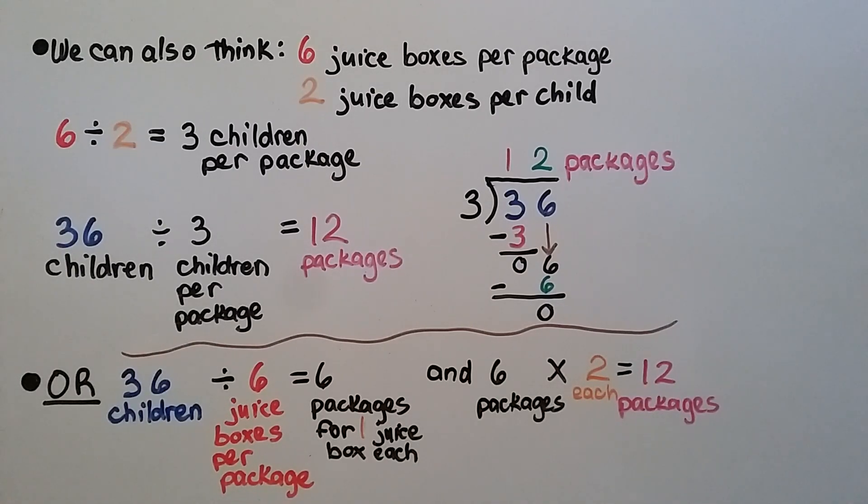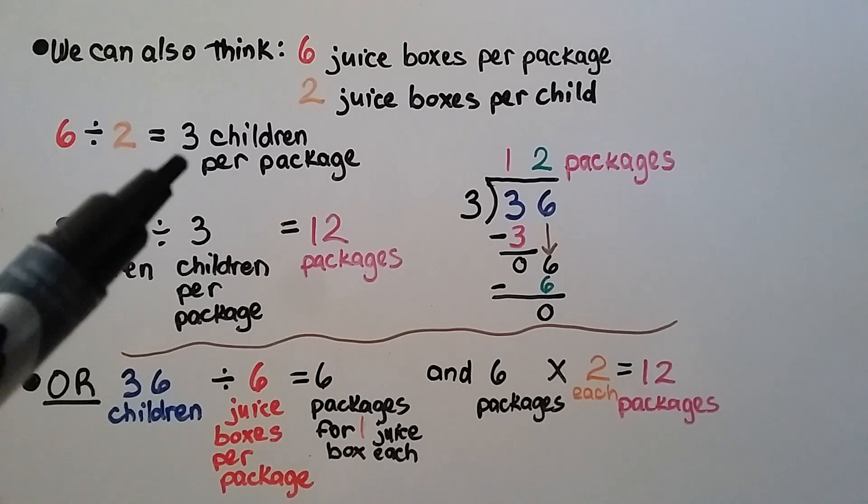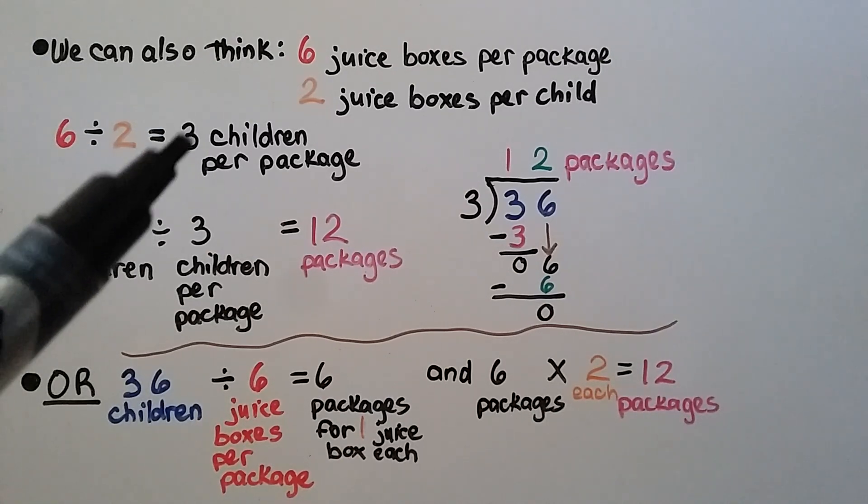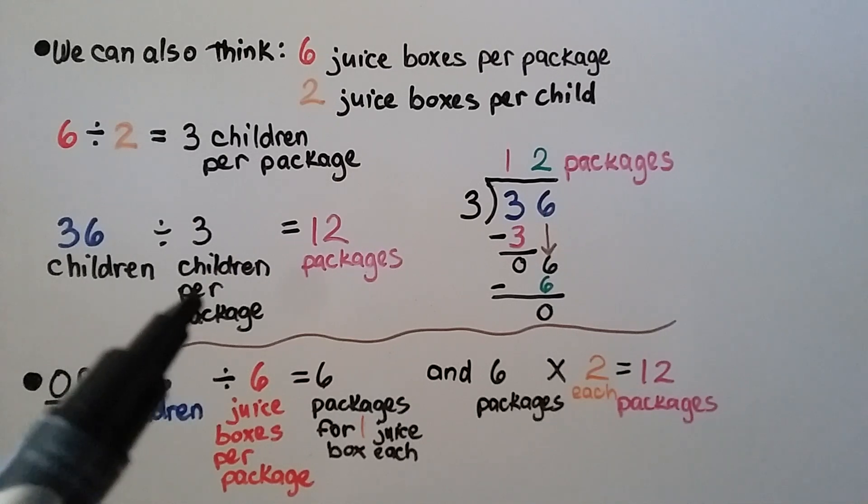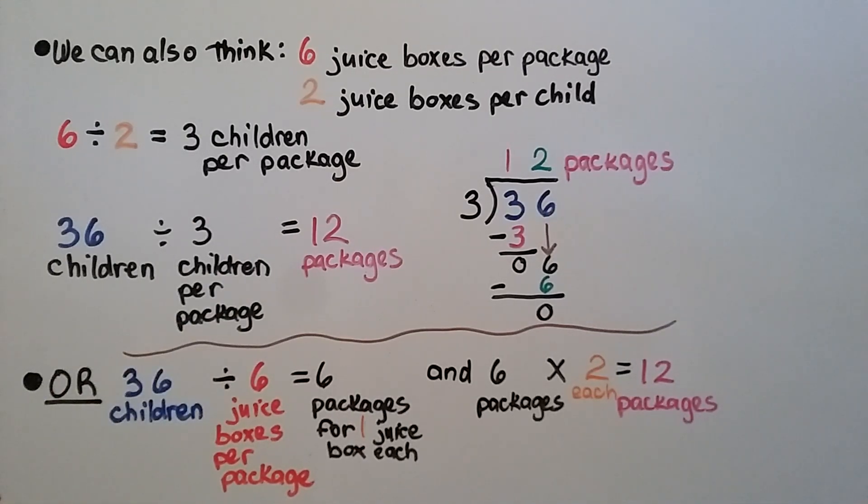We can also think, well, 6 juice boxes per package, 2 juice boxes per child. That means 6 divided by 2 is 3 children per package. 3 children can get juice boxes per package. Then we can do 36 children divided by the 3 children per package, and we get 12 packages. We can also think 36 children divided by 6 juice boxes per package is going to be 6 packages for 1 juice box each. But they're going to have 2 juice boxes each. So we can multiply this 6 times 2 for 2 each, and we get 12 packages. There's usually more than one way to solve a problem. It's just that some ways are more efficient, and some ways are easier.